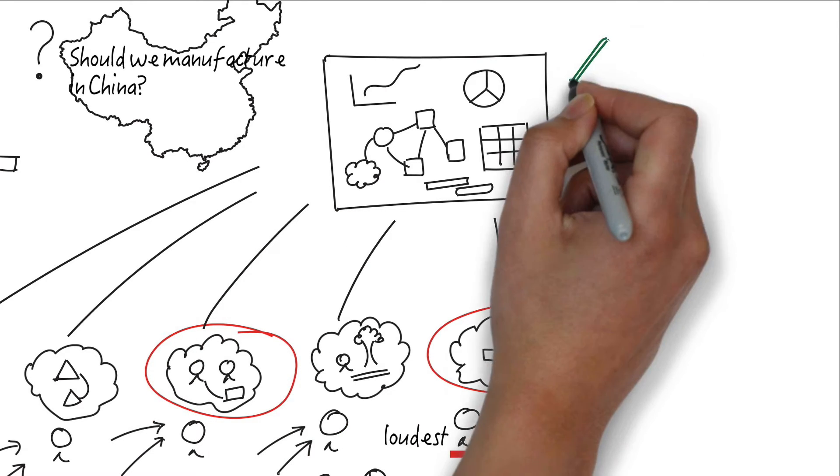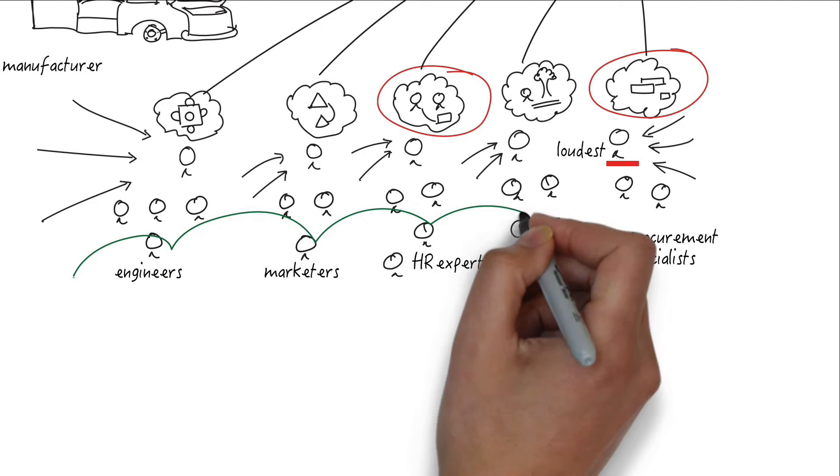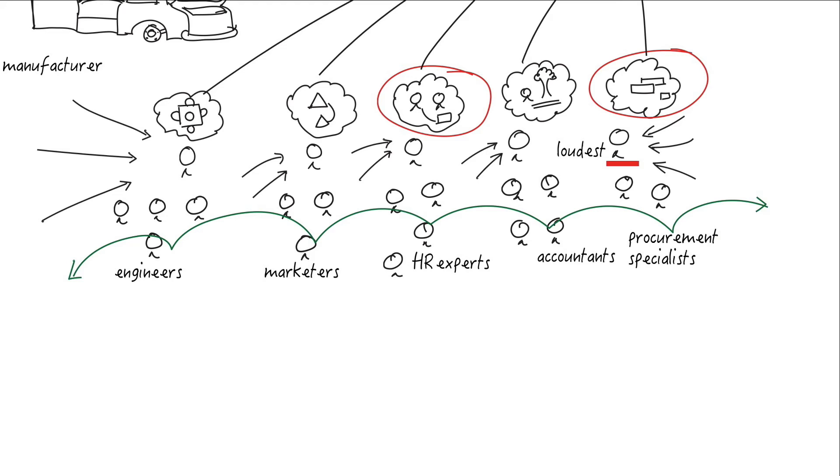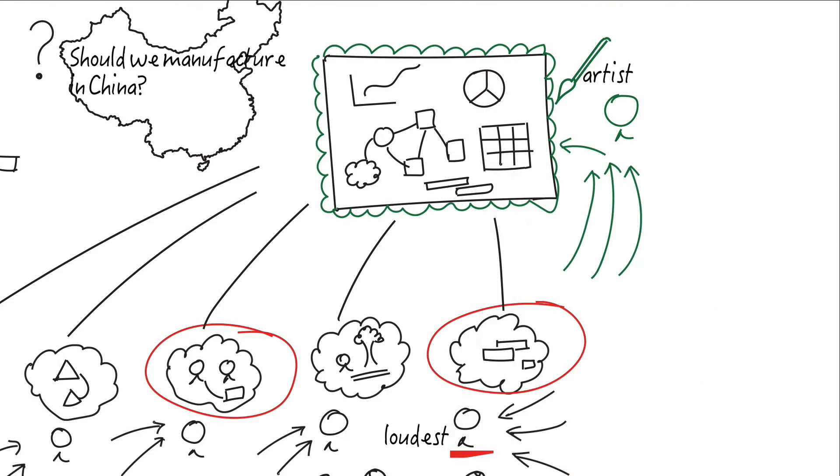This person is an artist who can paint a good picture. This person has wide experience and is able to look across the organization and see the connections. This person is a listener who can consume a lot of information and frame the problem. This person is a communicator who can articulate complex concepts in simple terms.